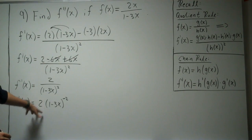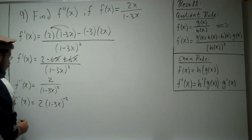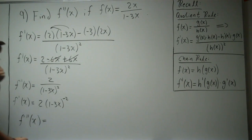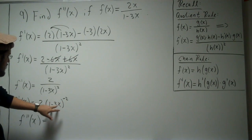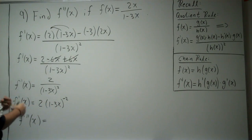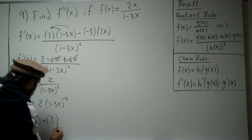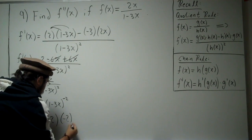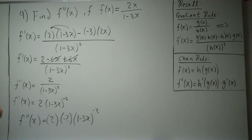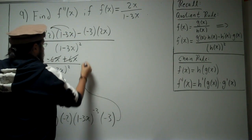Now we take the second derivative of this. The 2 is a constant, so we move it aside. This is where the chain rule comes in — we have an outer function and an inner function. The derivative of the outer function brings down the negative 2 exponent, giving us (1 minus 3x) to the negative 3. Then we multiply by the derivative of the inside, which is negative 3.